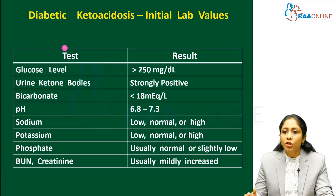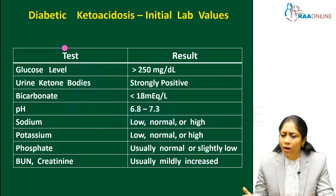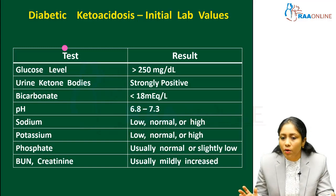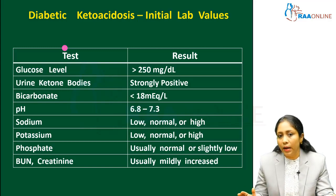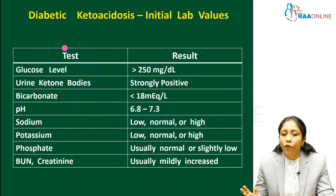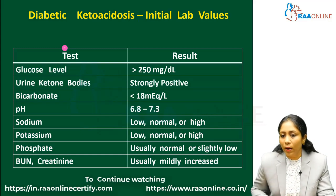In initial lab values for DKA, glucose levels are typically above 215 mg/dL, often above 300 or 400. Ketone bodies are strongly positive, bicarbonate is low (less than 18), and pH ranges from 6.8 to 7.3. Sodium and potassium can be low, normal, or high. Phosphate is usually normal or slightly low. Urea and creatinine may be mildly elevated due to pre-renal azotemia.